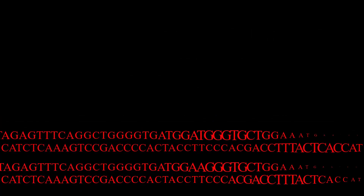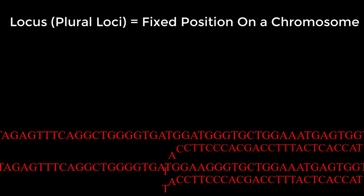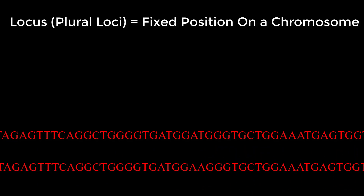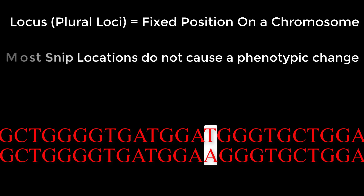In this example, we have the loci of two sister chromatids selected at random from a chromosome file. This SNP location contains a change from a thymine base to an adenine base. Most SNP locations don't cause a phenotypic change — referring to diseases or differences in appearance. Though these SNP locations do not cause phenotypic changes, they are still importantly used in genomics as markers.